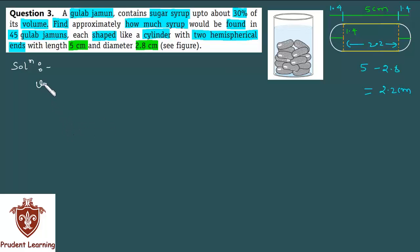Let us see the solution. Here we have volume of each Gulab Jamun as volume of cylindrical part plus volume of hemispherical part.